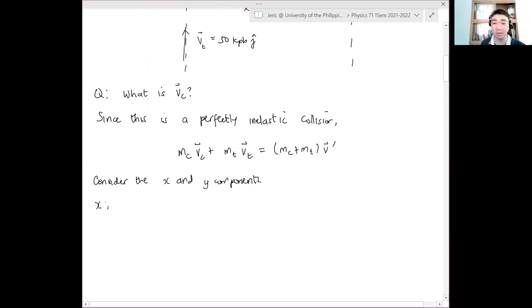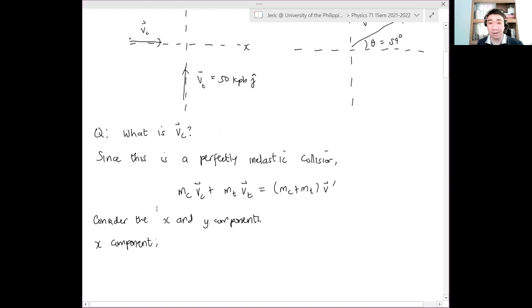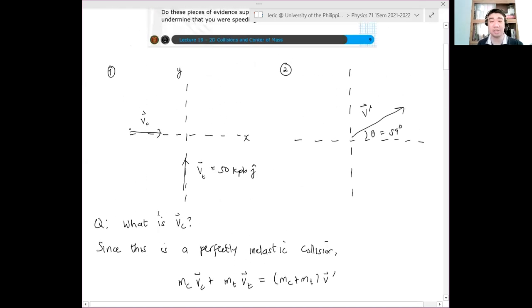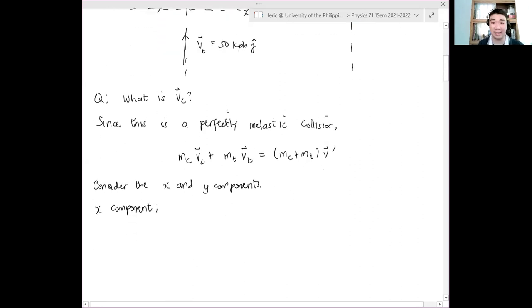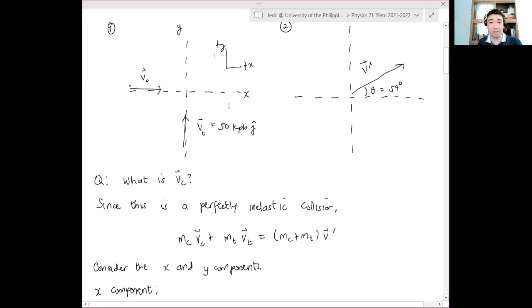Now, in the x component, what happens? Remember, your vc here, what is the direction of vc? Again, the car, your car is moving towards east. Therefore, using our coordinate system where this is positive x, that's the convention we'll use, positive x, positive y here. What happens to vc? It's only in the x direction.